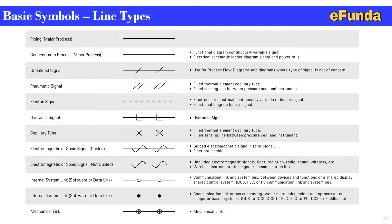The communication link symbol is a dark line with two solid circles connected by dotted lines to two hollow circles. This represents the system bus between devices and functions of a shared display or shared control system such as DCS, PLC, or PC. The internal system link or software/data link uses the same symbol but with two solid circles, representing a communication link or bus connecting two or more independent microprocessor or computer-based systems — DCS to DCS, DCS to PLC, PLC to PC, DCS to fieldbus, etc.